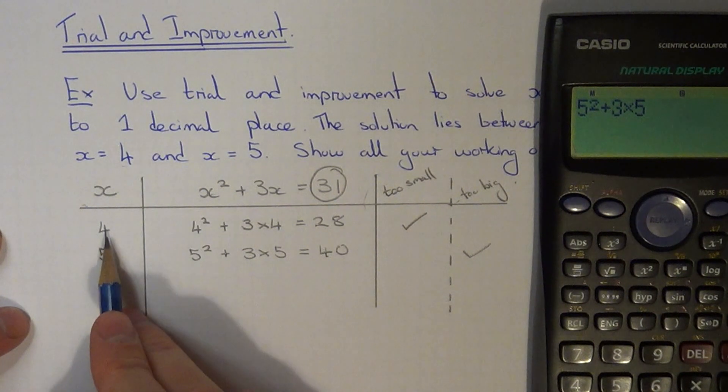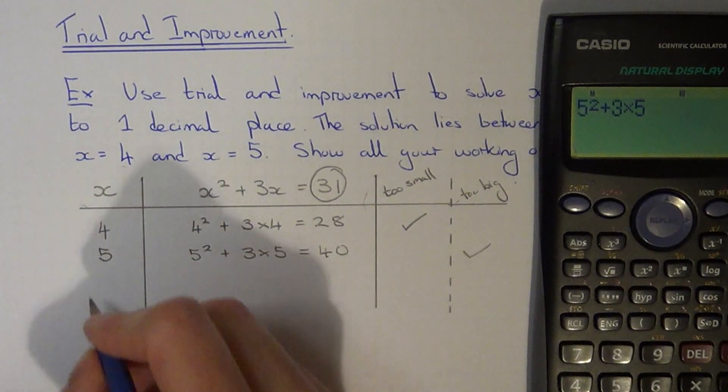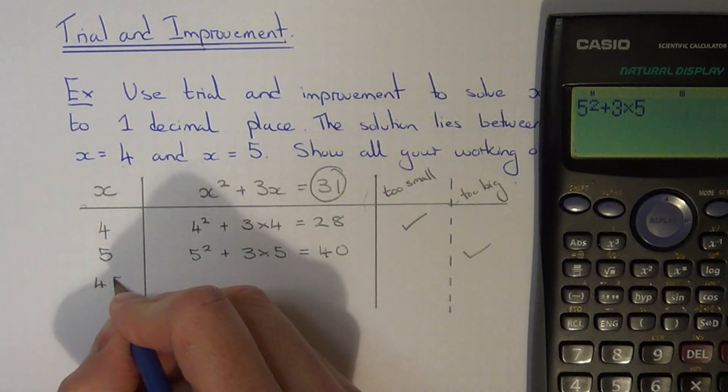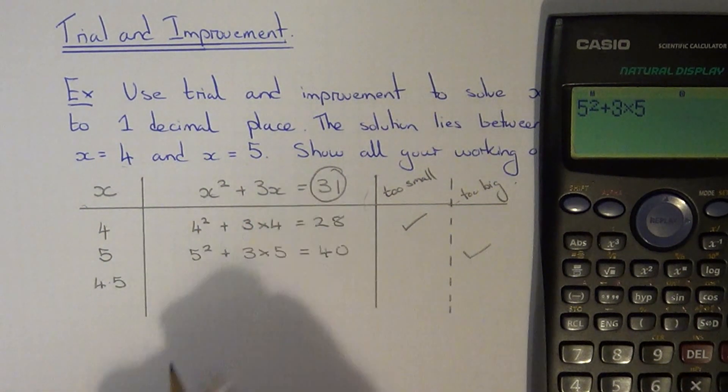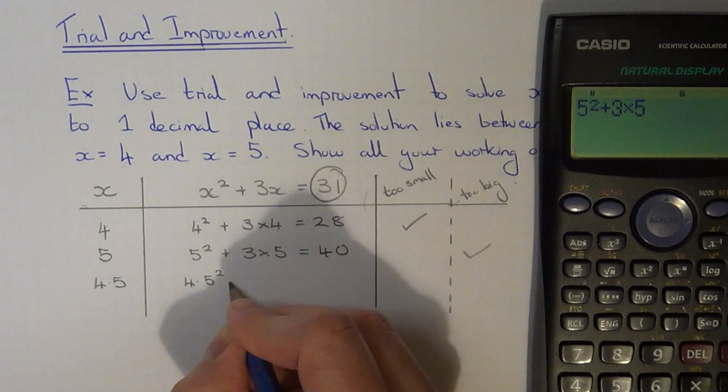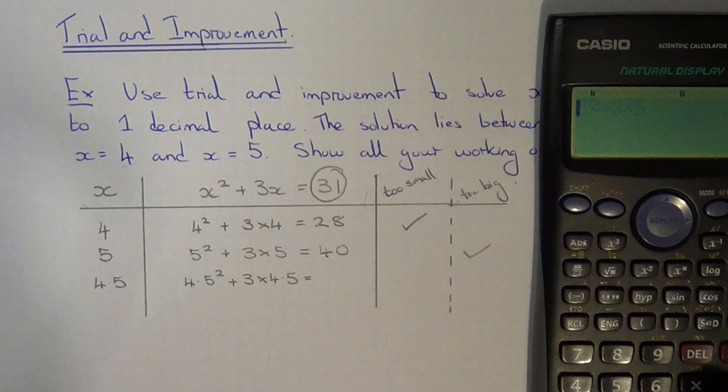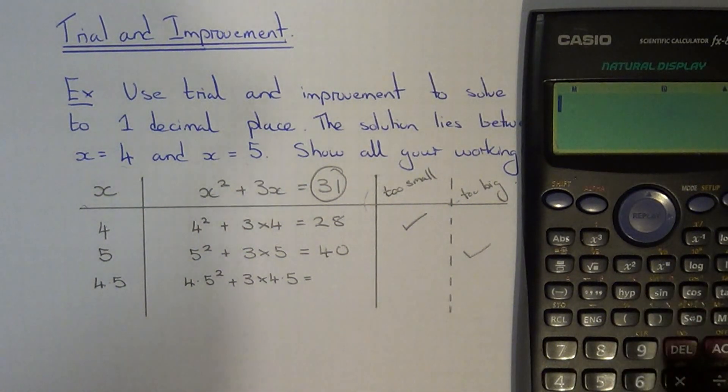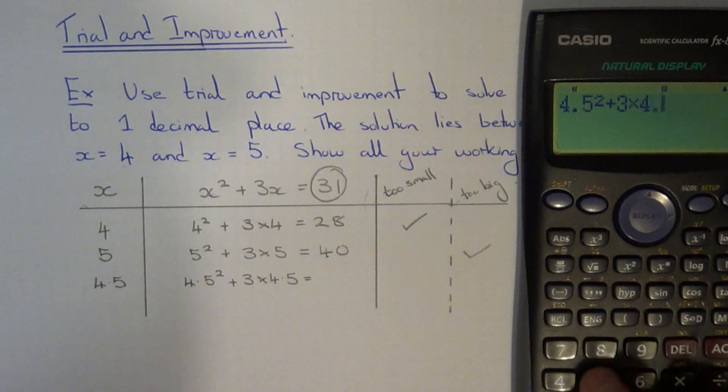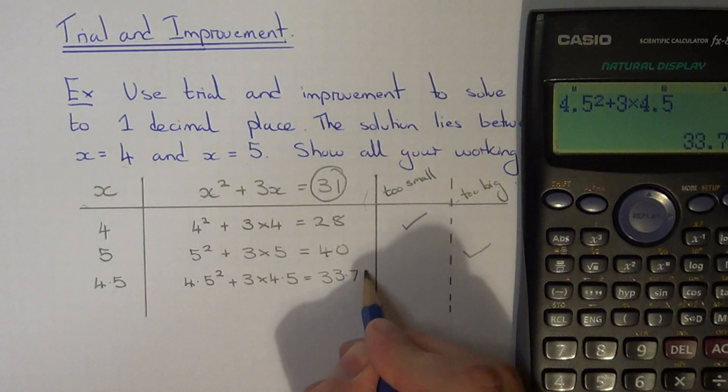So once you've done x equals 4 and x equals 5 you then need to go halfway between these two. So halfway between 4 and 5 is 4.5. So let's sub this one into our equation. So we get 4.5 squared plus 3 times 4.5. So again just work this out on your calculator. So 4.5 squared plus 3 times 4.5. That gives 33.75.